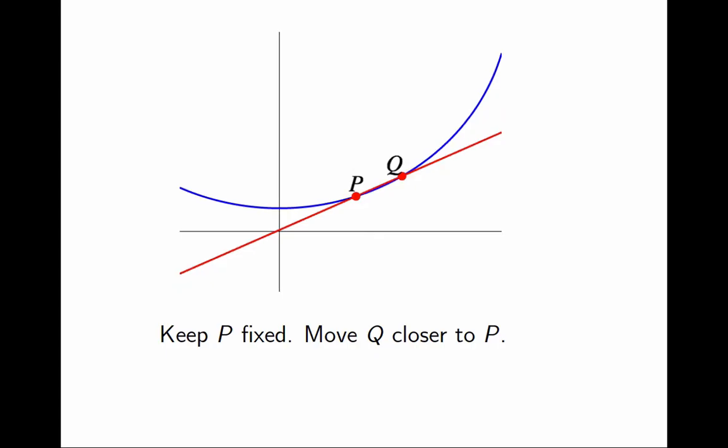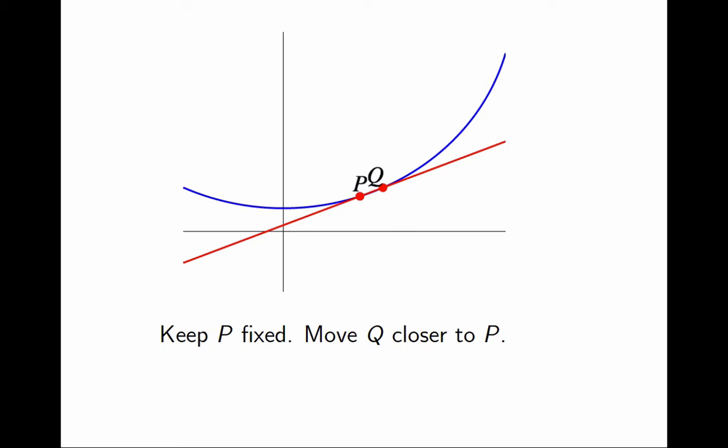And closer, and closer. Look what is happening. As Q gets closer and closer to P, this red line is becoming the tangent line at P. This suggests an idea. The tangent line can be obtained, somehow, as a limit of the red lines. I will try to get a proper definition of derivative from this.